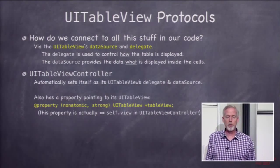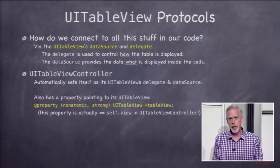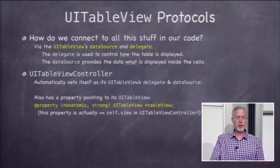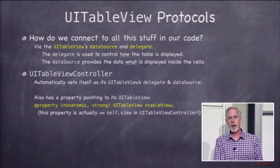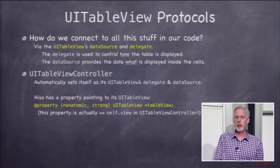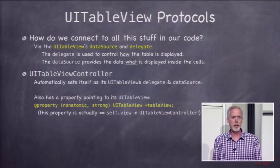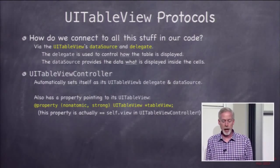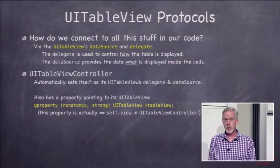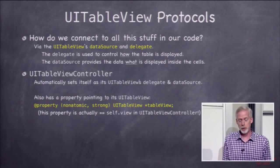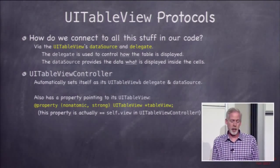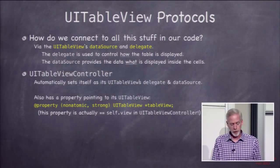The UITableViewController also has a property called tableView, which lets you get the tableView that's in your controller, so you can configure it and talk to it and things like that. It actually happens to be self.view in a UITableViewController, which is a little weird — that was a strange design choice on Apple's part, but it is what it is.